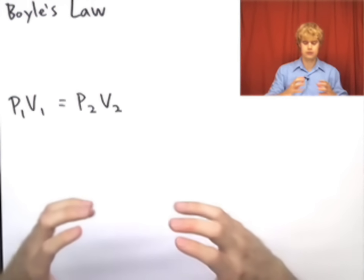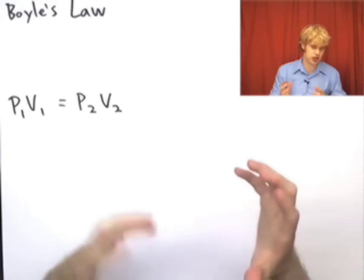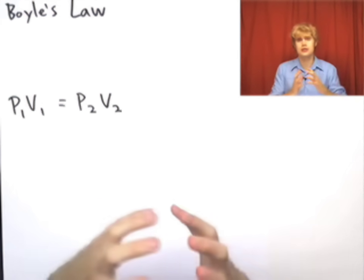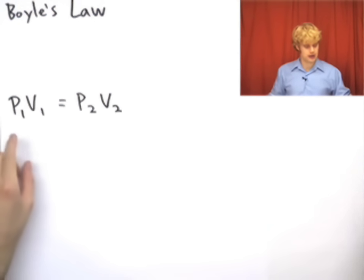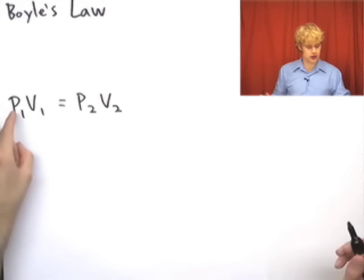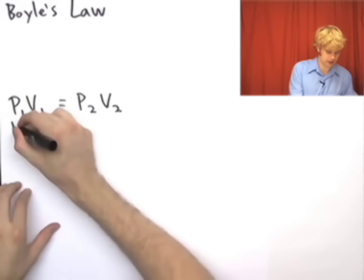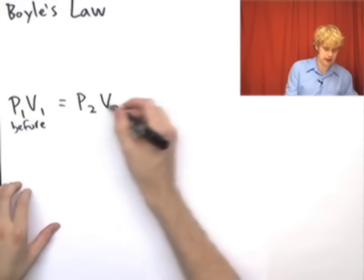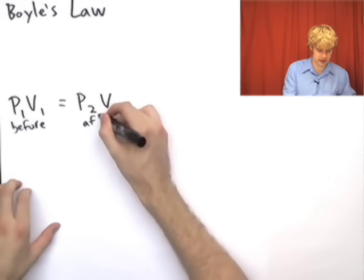Boyle's law assumes that we have a gas and it experiences some sort of a change. Maybe we increase or decrease the pressure, change the volume in some sort of a way. So P1V1 means that the pressure and the volume before the change multiplied together equals the pressure and the volume after the change multiplied together.